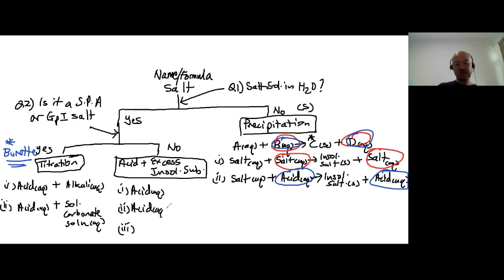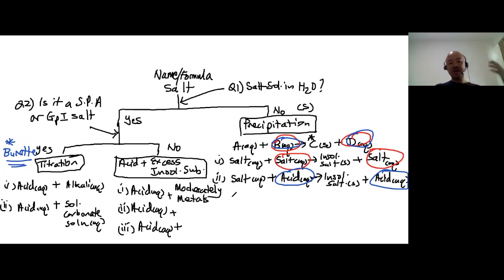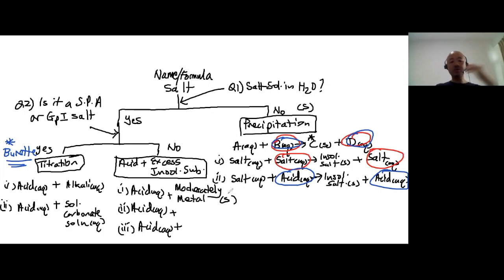For the 'acid with excess insoluble substance' method — you must use an acid. The method name will tell you that you must use an acid. What can you have here? It can be a moderately reactive metal. Metals are not just metal — there are very reactive metals, moderately reactive, and unreactive metals. So we use moderately reactive metal, which doesn't dissolve in water. Too reactive and it will explode — sodium, potassium, calcium, these are the top three, you don't use them. Also, we cannot use unreactive metals: copper, silver, gold, or anything below hydrogen in the reactivity series.